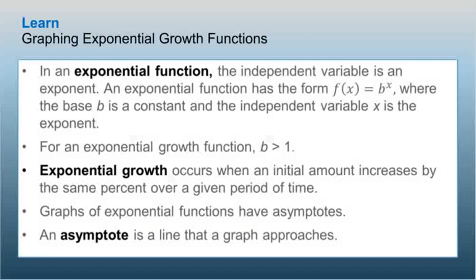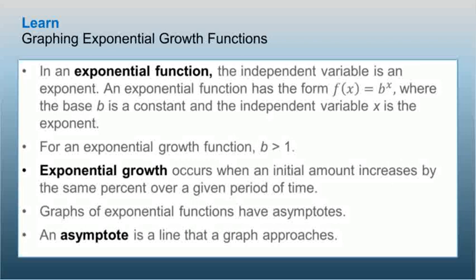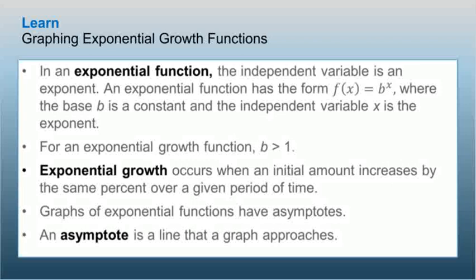For an exponential function, b has to be greater than 1 for growth. If b is less than 1 but greater than 0, then it would be a decay. Exponential growth occurs when an initial amount increases by the same percent over a given period of time. The graphs of exponential functions have asymptotes, which are boundaries — a line will approach them but will never cross or touch them.